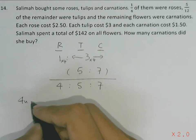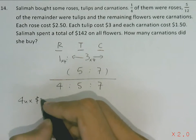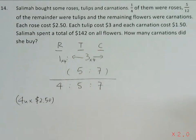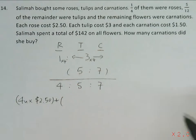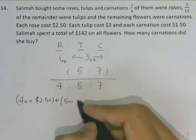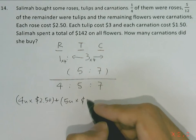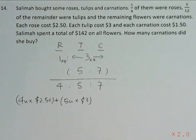So from 4 units of roses, each rose cost $2.50. This is the amount of money she spent on all the roses. For the tulips, she bought 5 units of tulips, each tulip cost $3.